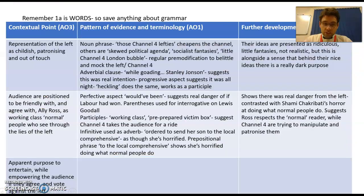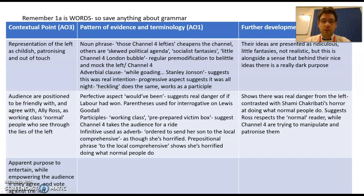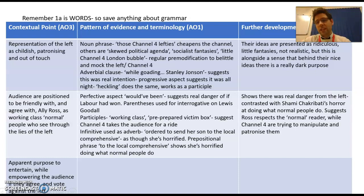In terms of the evidence - it's the same evidence used for the lexis question - I want to think about what you could do with it for grammar. So 'those Channel 4 lefties': in the last video I looked at it because of the determiner and the noun 'lefties.' Now we're looking at grammar. What could we say? Well, it's a noun phrase - remember, a noun phrase ends with a noun, it's a group of words based around a noun. 'Those Channel 4 lefties' is a noun phrase. Straight away it cheapens them - they are defined by being lefties, and Channel 4 is just a modifier on 'lefties.' If you're on Channel 4, you're just a lefty.